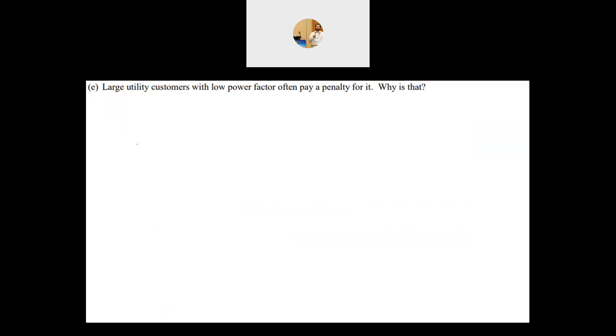The first question is: large utility customers, industrial loads for example, with low power factor often pay a penalty for it. Why is that? We need first to understand why we have a low power factor, and the best way to explain this is using the power triangle.